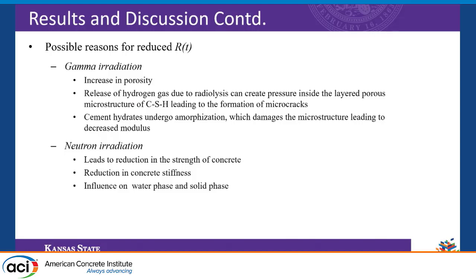To list the possible reasons: gamma radiation induces radiolysis — evaporation of water or change in the water structure of the cement paste — which releases hydrogen gas and puts pressure inside the porous microstructure of the CSH, leading to formation of micro cracks and altering the microstructure. Cement hydrates undergo amorphization, which damages the microstructure leading to decreased modulus. Unlike the literature, we do see neutron influence on the cement-based sample through a neutron knockout effect on calcium ions — the C in the CSH is mainly affected — on both the water phase and the solid phase, causing reduction in strength and stiffness related to time-dependent behavior.